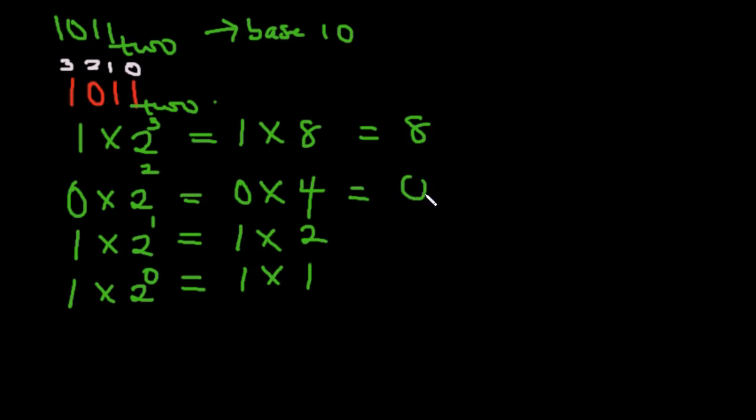So now I have 8, I have 0 multiplied by 4 which is 0, this is 2, and this is 1. What do I do? I add all of them together. So I have 8 plus 0, that's 8, plus 2, that's 10, plus 1, which is 11 in base 10.